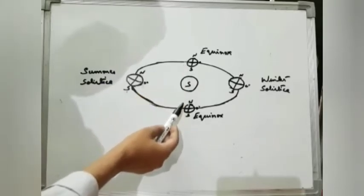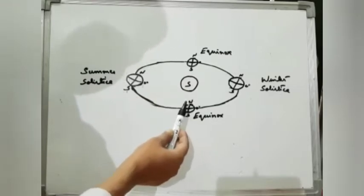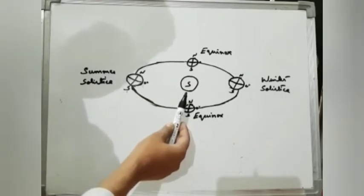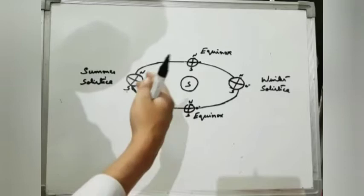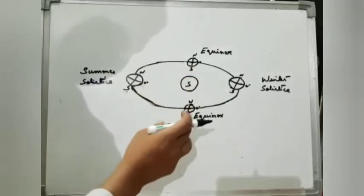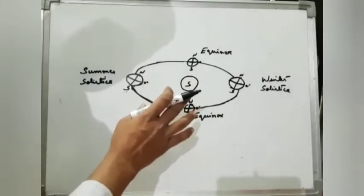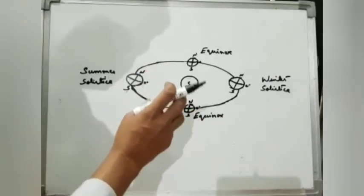And these two phases are called the equinox, which means 12-hour day, 12-hour night. Why is it very important to understand? Because most of the time when somebody asks you why seasons are changing, students give the simple answer: because of the revolution. No doubt it is partially true, but it is not absolutely true.